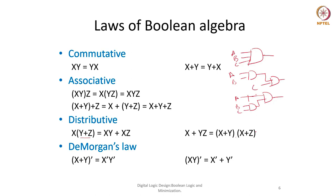De Morgan's law says that if we take the NOT of an expression, then all individual variables will be inverted and OR will be converted to AND. Similarly, if we do the inversion of an AND operation of two variables, all individual variables are inverted and the AND is changed to an OR gate.